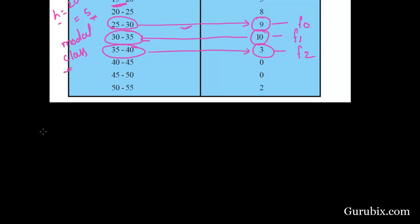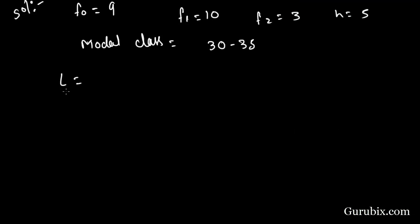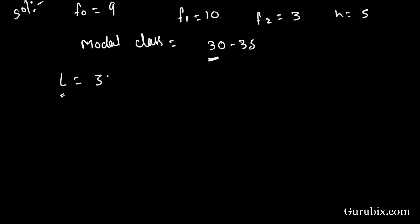Let's find the solution. F0 is equal to 9, F1 is equal to 10, F2 is equal to 3, and H is equal to 5. The modal class is 30 to 35. L is the lower limit of the modal class, and we can see 30 is the lower limit, so L is equal to 30.